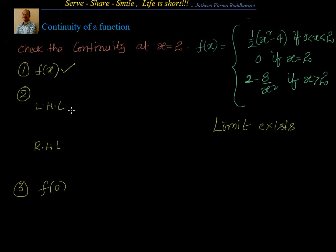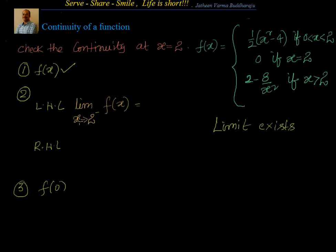So let's take the left-hand limit. We are talking about limit as x tends to 2 minus of f of x. If you come from the left-hand side at x equal to 2, the function is given by half into x square minus 4. So substituting x equal to 2, that is half into 2 square minus 4, which is half into 4 minus 4, equal to 0. So the left-hand limit is equal to 0.